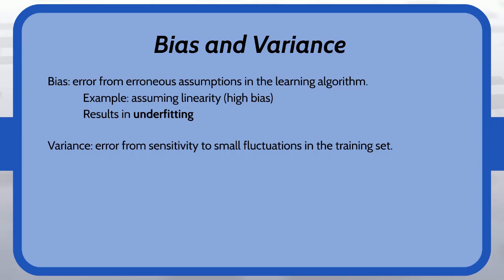On the flip side we have variance and this is error from sensitivity to small fluctuations in the training set. So instead of mapping the underlying trend here we are just making our model too complex and picking up on the noise and the small fluctuations instead of the underlying trend. So an example would be using a higher order polynomial than necessary. Perhaps the data is linear and we try to map it with a polynomial. This is going to give us perfect accuracy on the training set. However, it's not going to be able to predict future data because we've missed that trend.